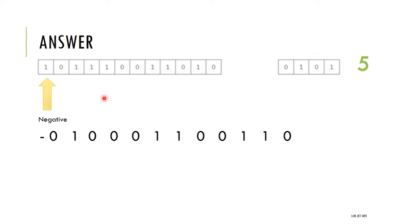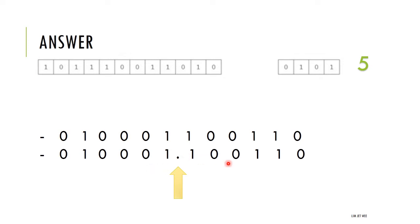Now for the mantissa — I know it's a negative number, so I put a negative sign to remind myself. Based on the question, for a negative number I need to perform a two's complement on this binary string. After performing the two's complement, you should get: 0 1 0 0 0 1 1 0 0 1 1 0.